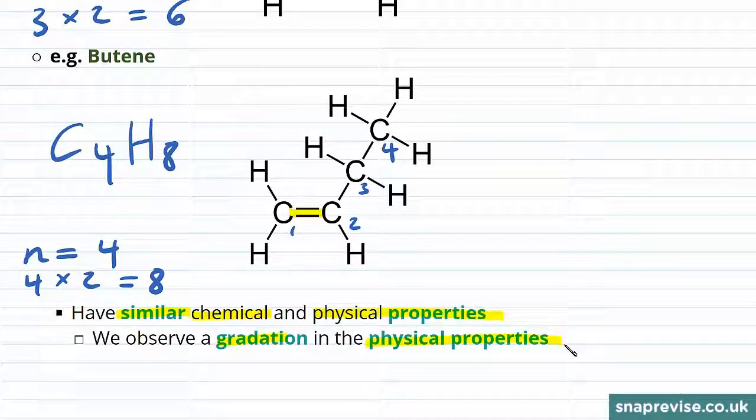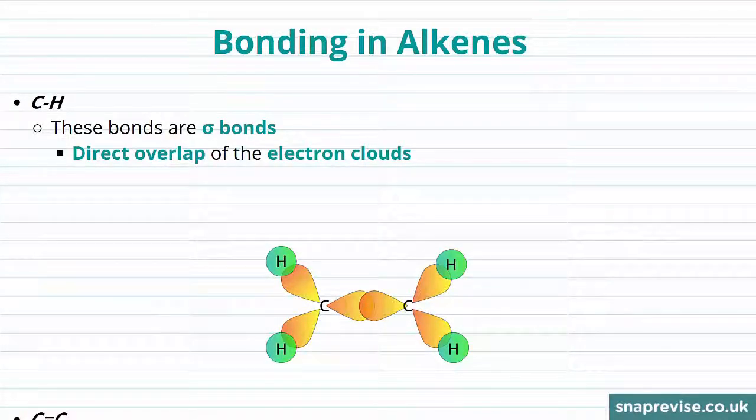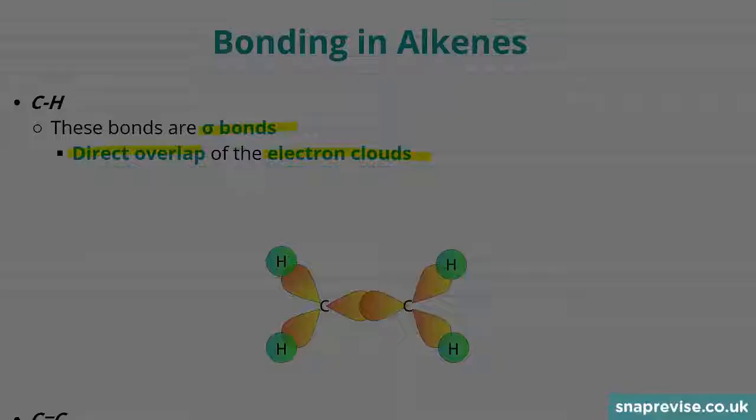So now we've taken a look at an introduction to alkenes, let's have a look at the bonding that we observe within alkenes. As I mentioned, alkenes are hydrocarbons. They contain only carbon and hydrogen atoms. So if we first of all take a look at the covalent bonds between our carbon and hydrogen atoms, these are what we call sigma bonds. They involve the direct overlap of the electron cloud of our carbon and hydrogen atoms.